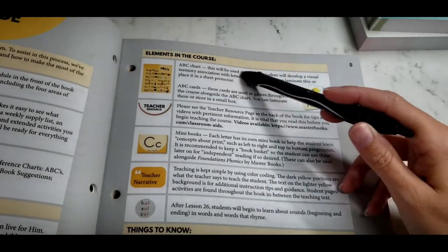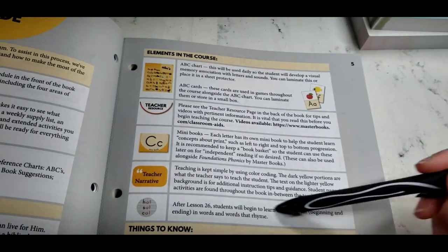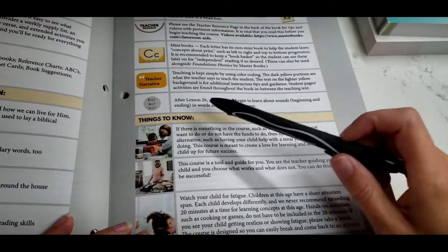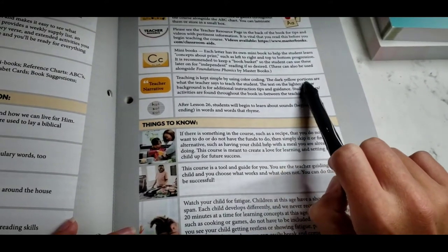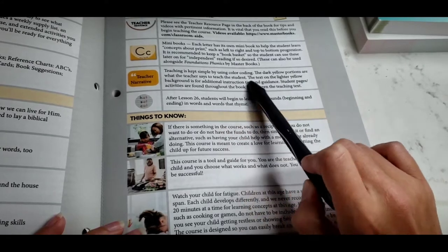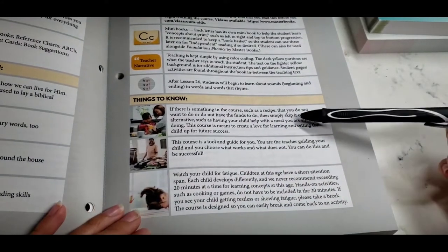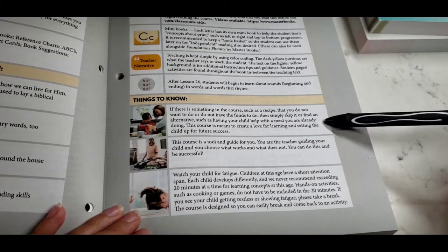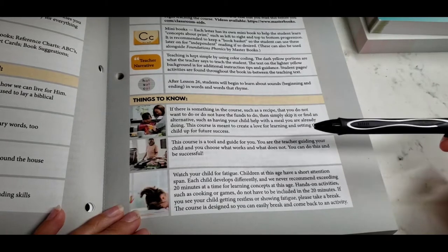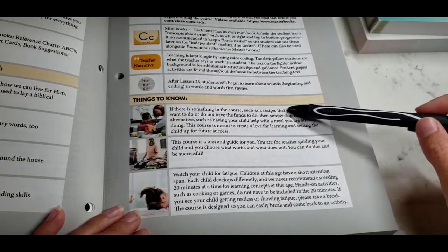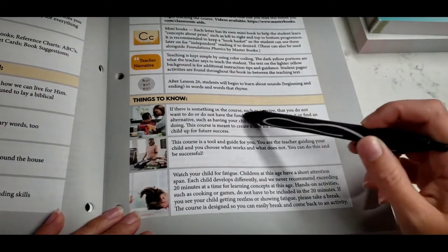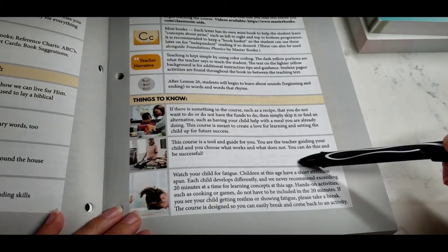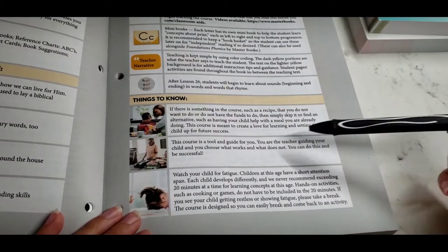We have Bible time, learning lessons from God's word and how we can live for him. Bible stories, character and memory verses used to lay a biblical foundation. You have rhyme time, learning new vocabulary words, life skills, how to do important things, ABCs and more, alphabet and basic reading skills. In the back of the book you have the mini books as I was showing you. There's a resource page for teachers, ABC chart and cards. And then you'll begin with the sounds after lesson 26 of the words. And then for when you're reading, it's kept and used color coding dark yellow are what the teacher says to the students. And the lighter yellow is just information and tips for you.